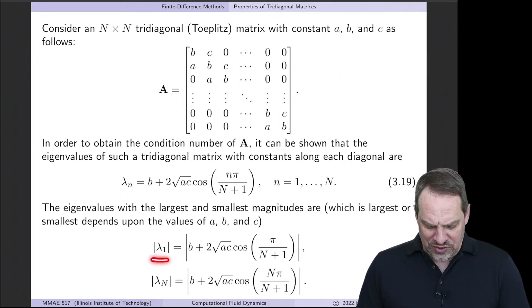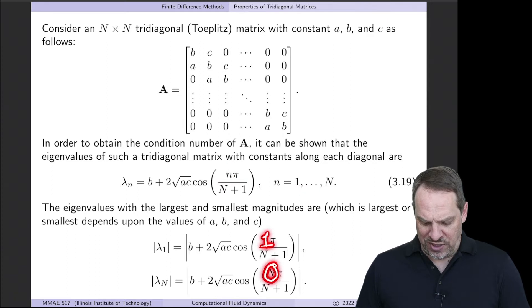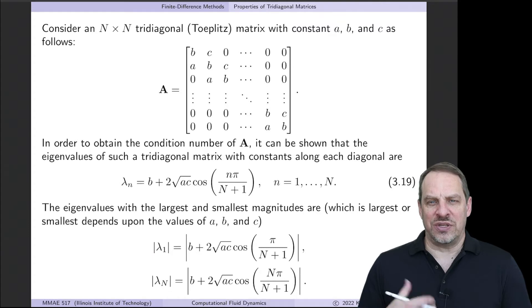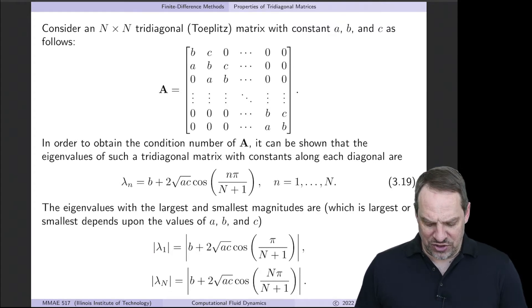The smallest and the largest of the eigenvalues are given when little n is either 1 or capital N. Now which one of these two is the smallest or largest depends on the values of a, b, and c, but those will give us the smallest and the largest.